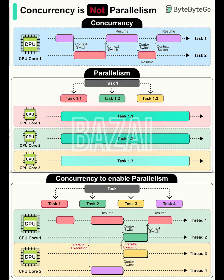Most apps feel fast because they juggle many things at once. But there's a crucial distinction behind the scenes: concurrency and parallelism. They sound similar, but they're not the same, and knowing the difference helps build faster, more reliable systems.